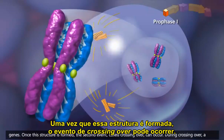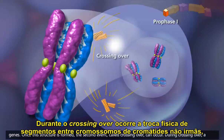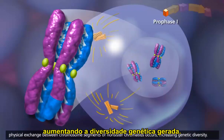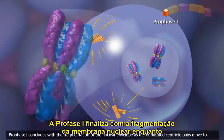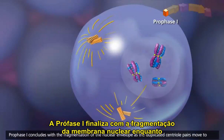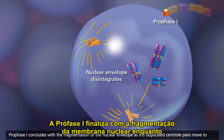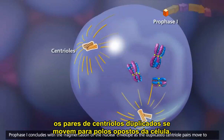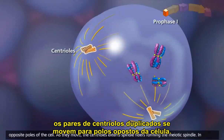Once this structure is formed, the second event, called crossing over, can occur. During crossing over, a physical exchange between chromosome segments of non-sister chromatids occurs, increasing genetic diversity. Prophase I concludes with the fragmentation of the nuclear envelope as the duplicated centriole pairs move to opposite poles of the cell.